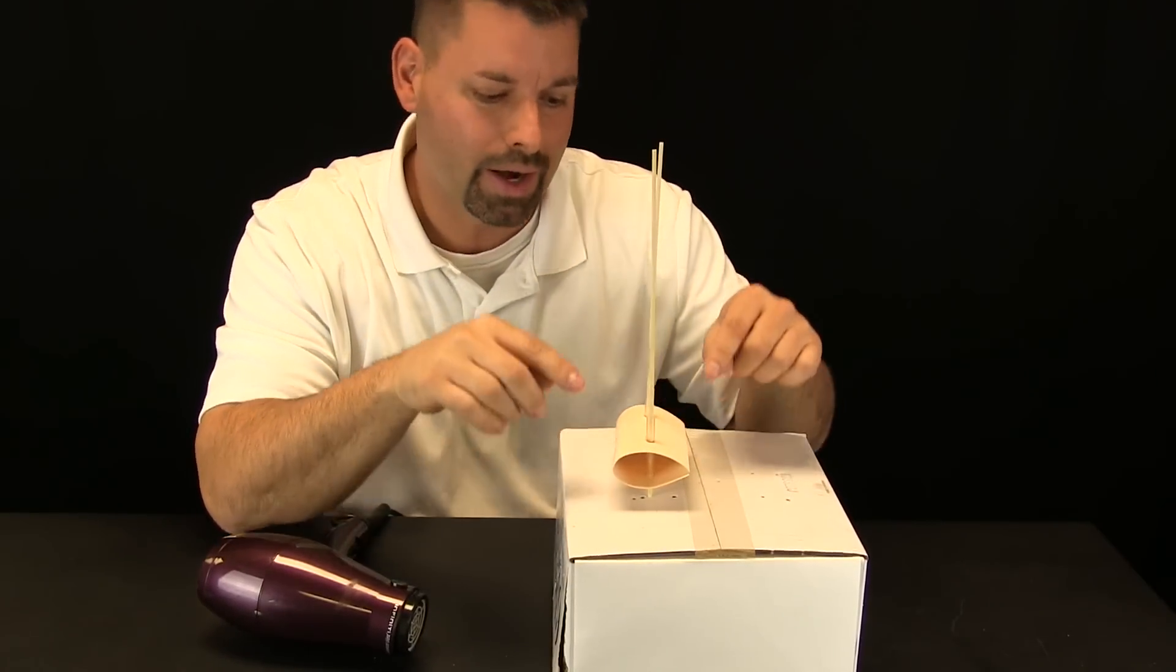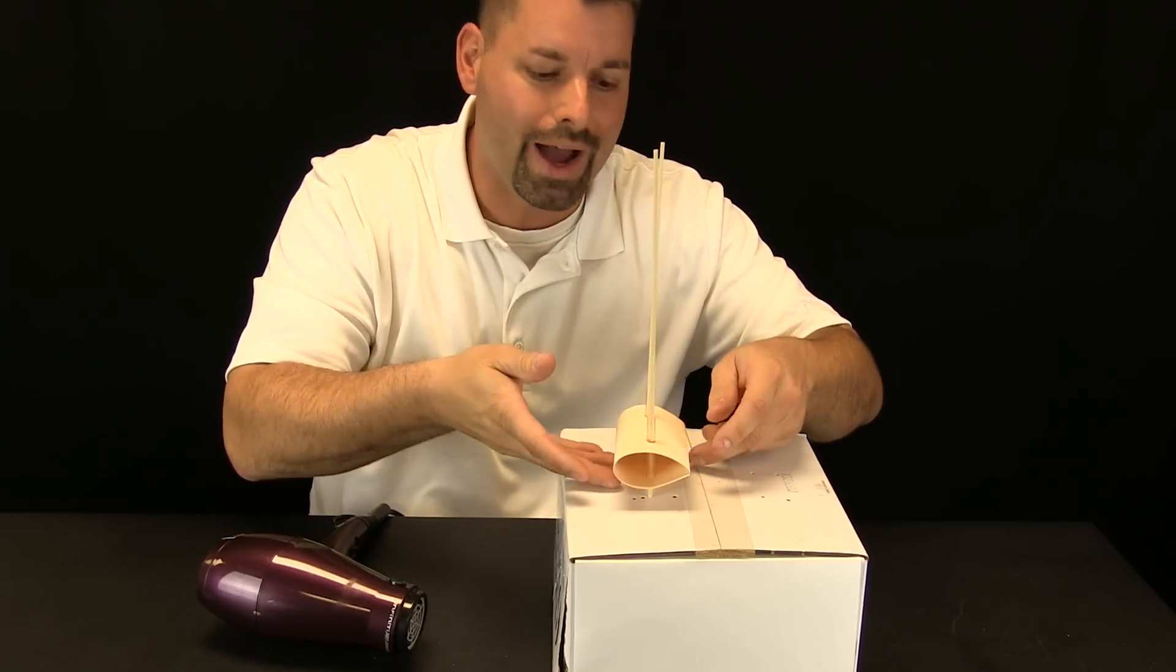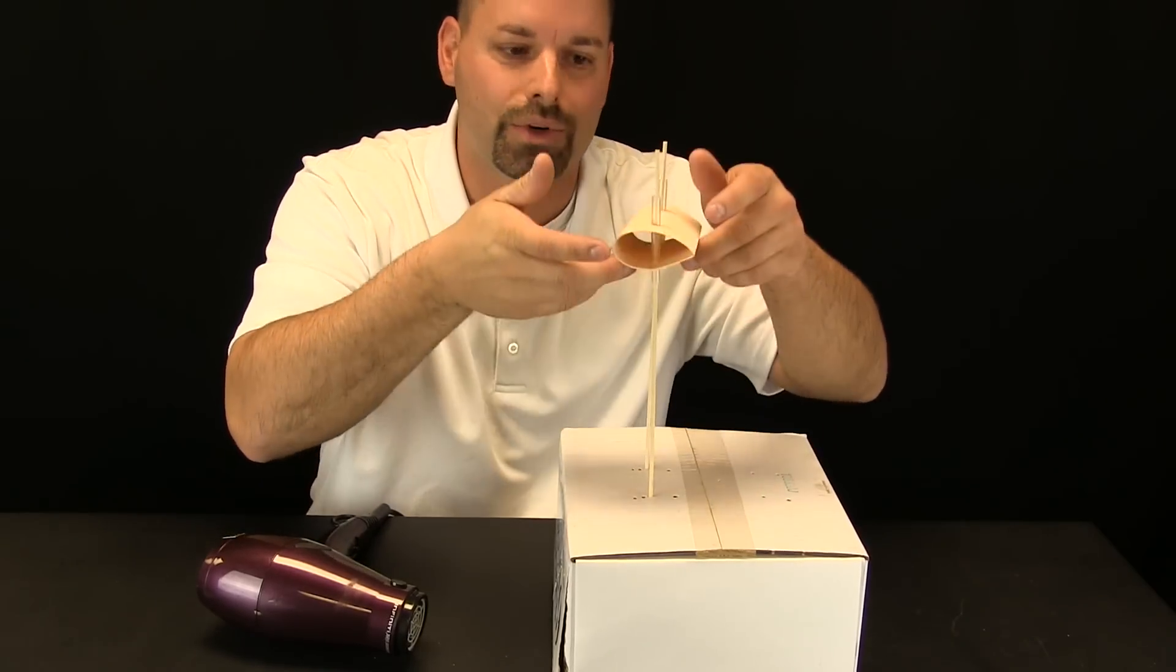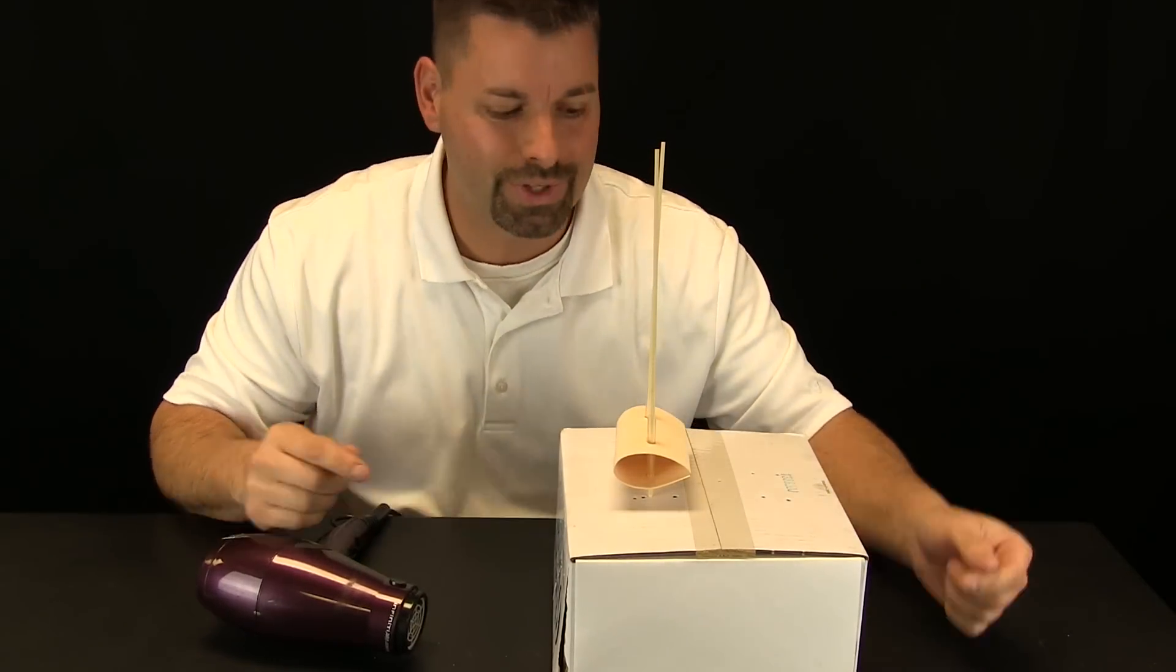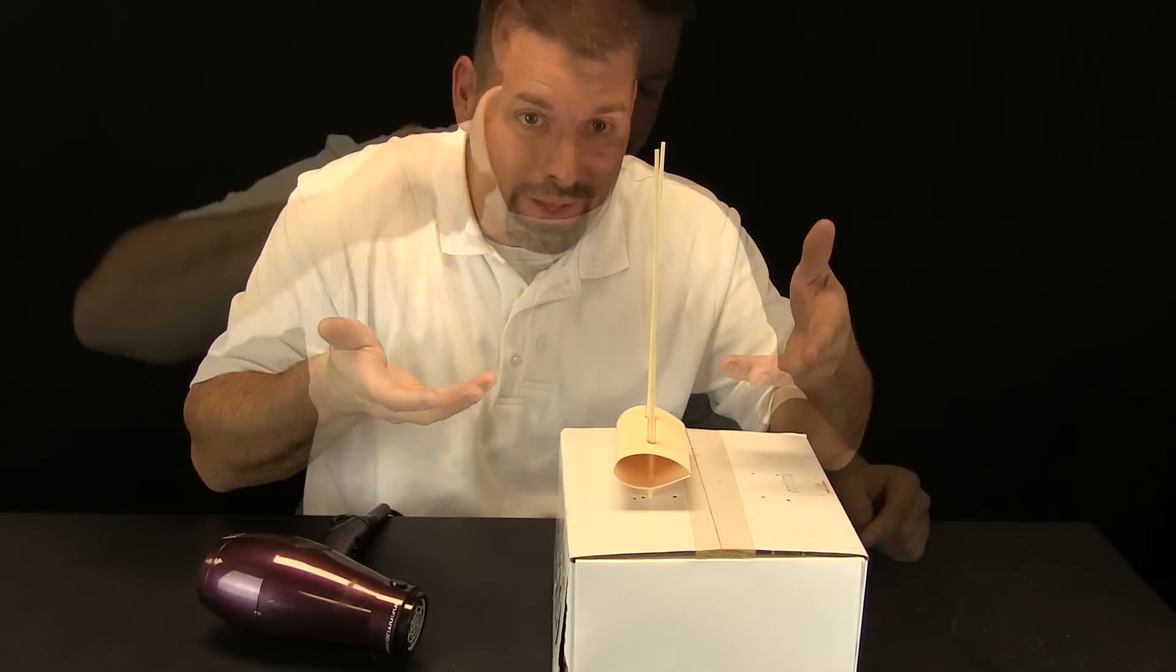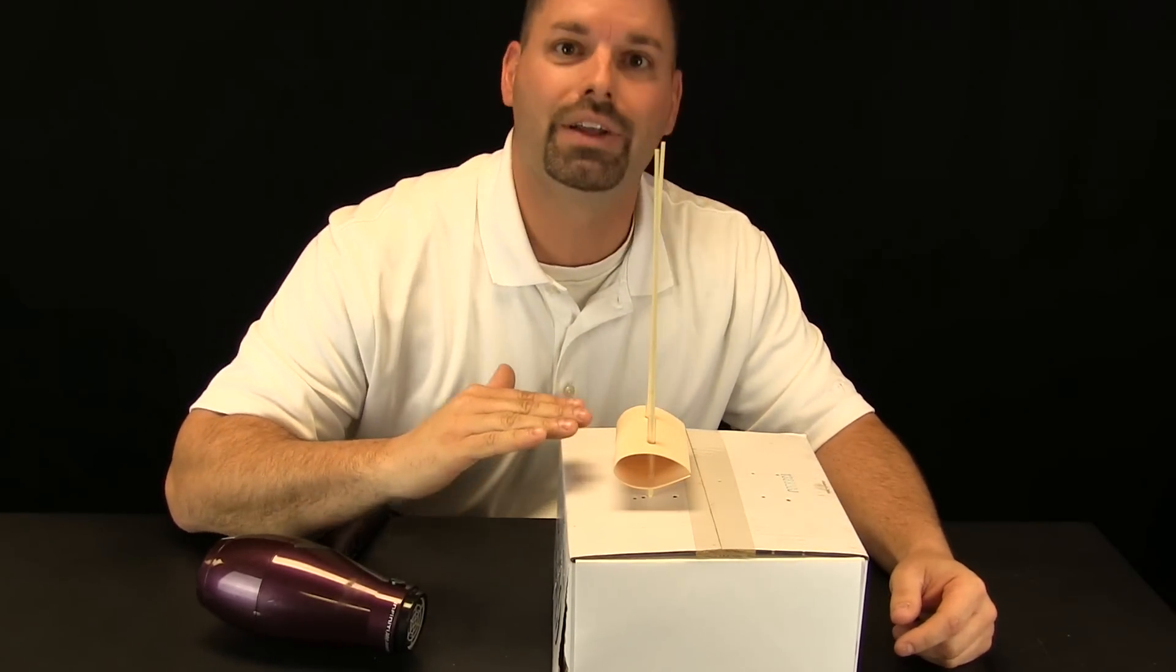So this is going to be our little airplane wing and I put two straws through it so it would ride up and down on my skewers. And we are going to see if we can use Bernoulli's principles to get lift on our airplane wing and see if we can actually have takeoff.